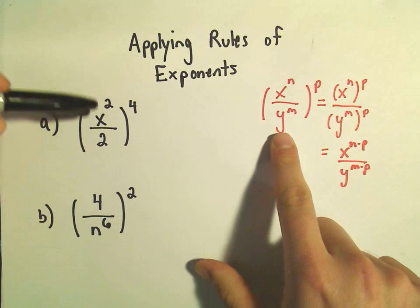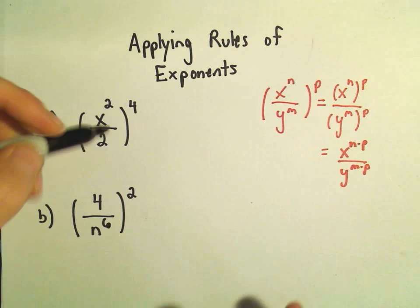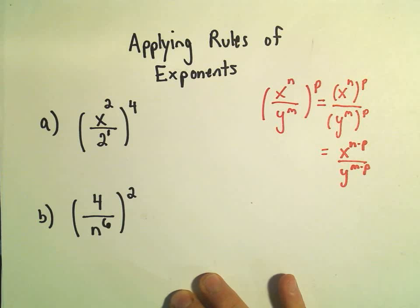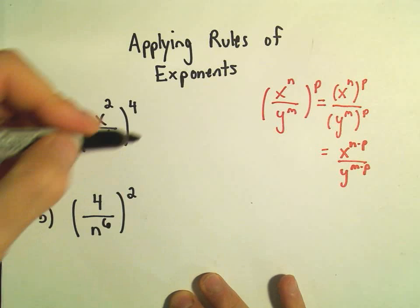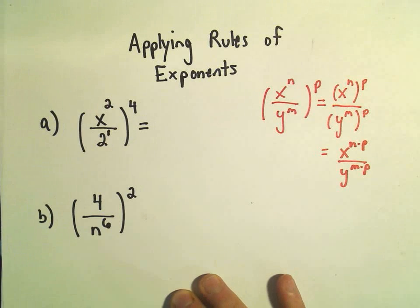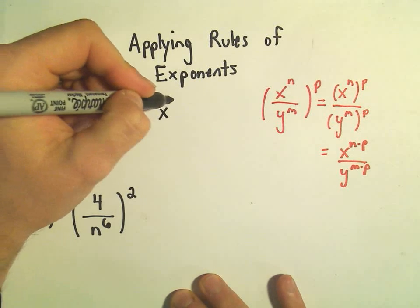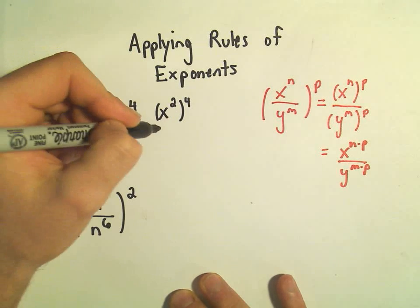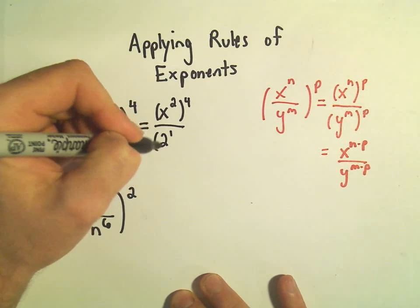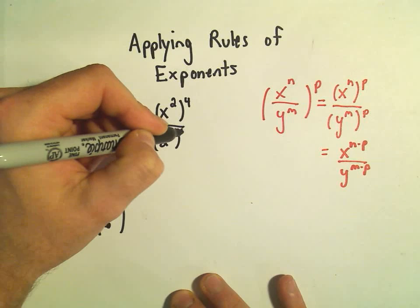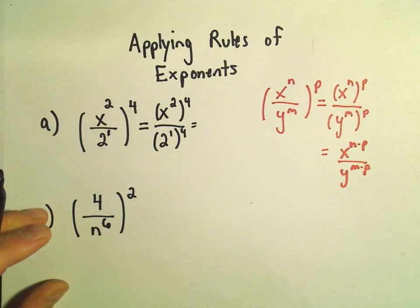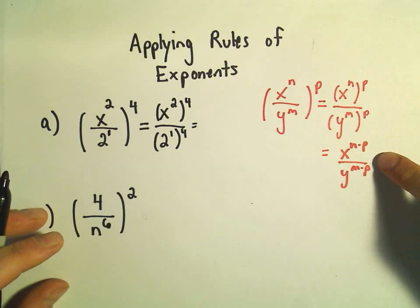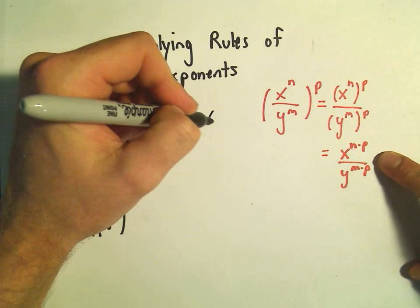So here I've got x squared over 2. You could make this to the first power if you want to see an exponent. So here we would have x squared being raised to the fourth power, over 2 to the first being raised to the fourth power. So now we're at this step.